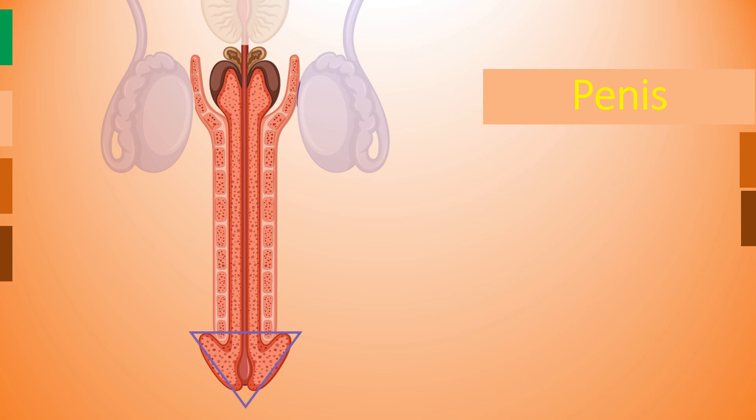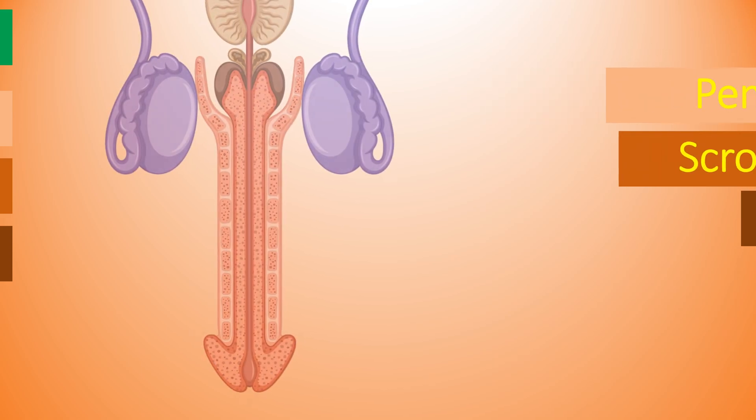The penis also transports urine out of the body. The triangular structure seen at the tip of the penis is called the glans penis. When the penis is erect, the flow of urine is blocked from the urethra, which allows only semen to pass.